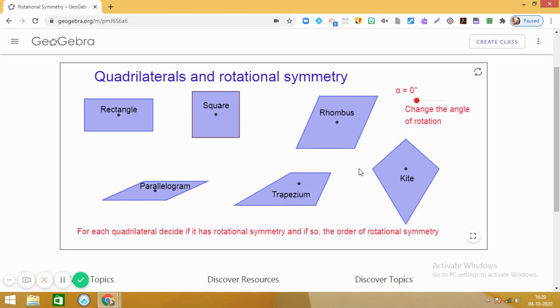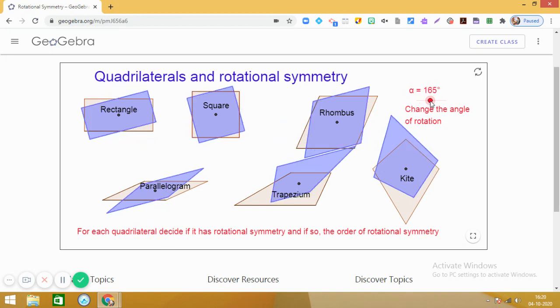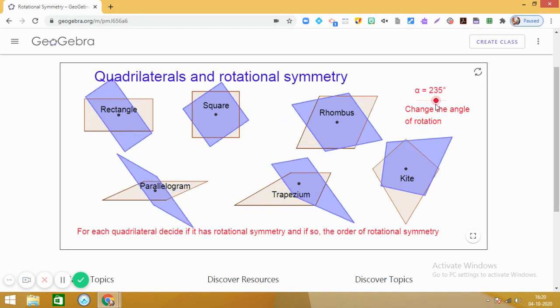Now, the process of turning an object around a fixed point is called rotation. So, you can see here on the screen, when I change the angle of rotation, these objects start rotating around the point.